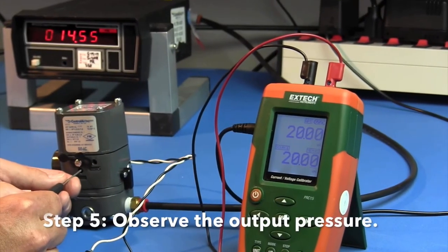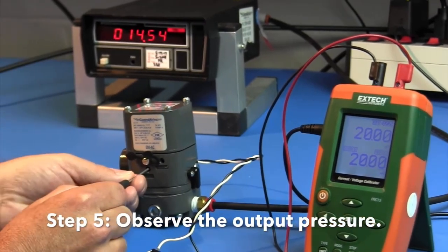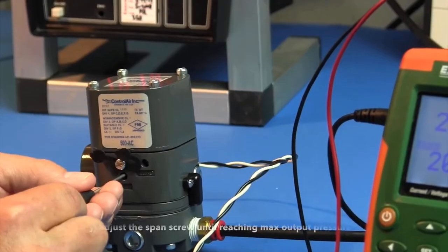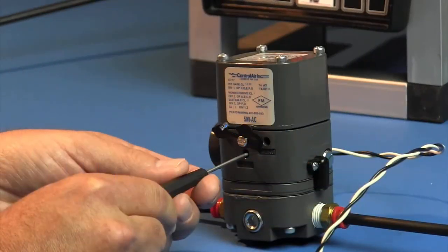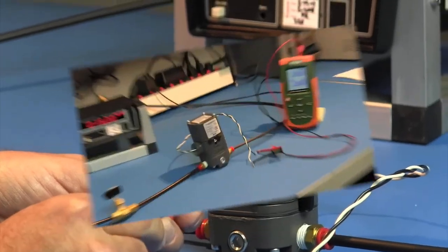Step 5. Observe the output pressure. If necessary, adjust the span screw until reaching maximum output pressure setting. Turn span screw counterclockwise to increase pressure, clockwise to decrease pressure.